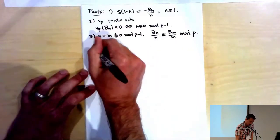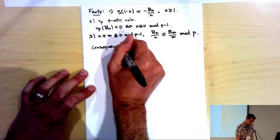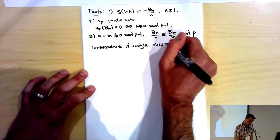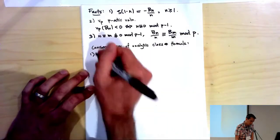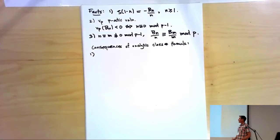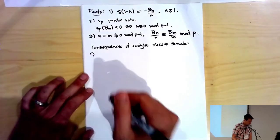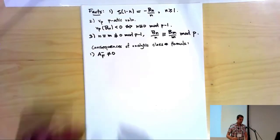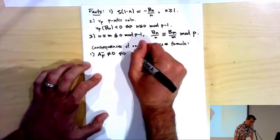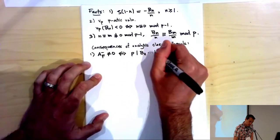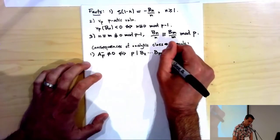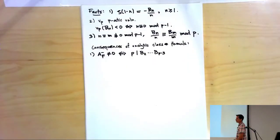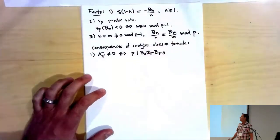Now the analytic class number formula. One consequence is a criterion for irregularity: A_F⁻ is non-zero if and only if P divides one of the Bernoulli numbers B_2, B_4, … up to index P−1. For example, 37 divides B_32, and 691 divides B_12. The numerators of B_n/n are all 1 up to index 12.